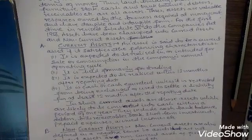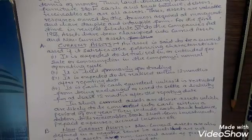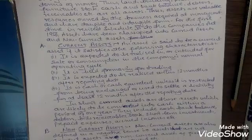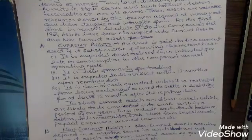Number 2: it is held primarily for trading. Current assets are generally held for trading purposes. Number 3: it is expected to be realized within 12 months after the reporting date — that is, the day when it is recorded in the books of account. It is assumed that within a period of 12 months, the entire money will be realized.